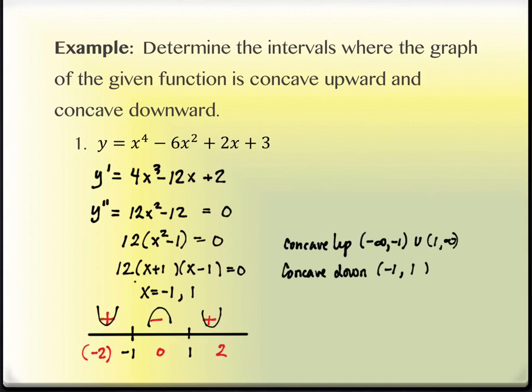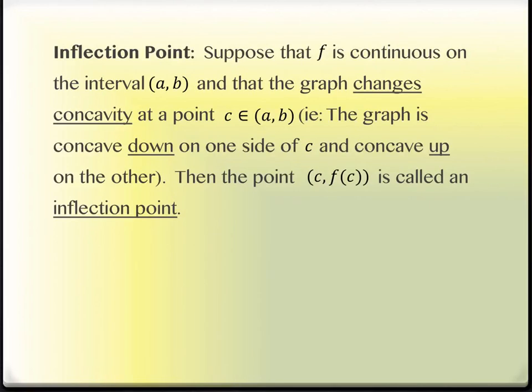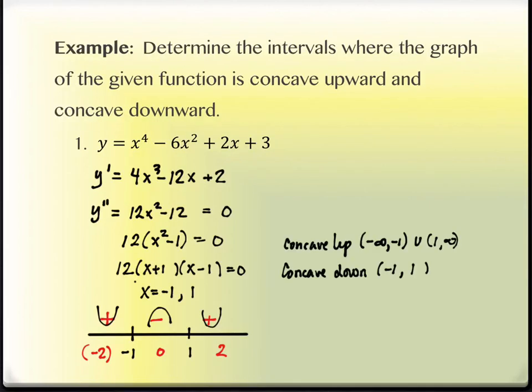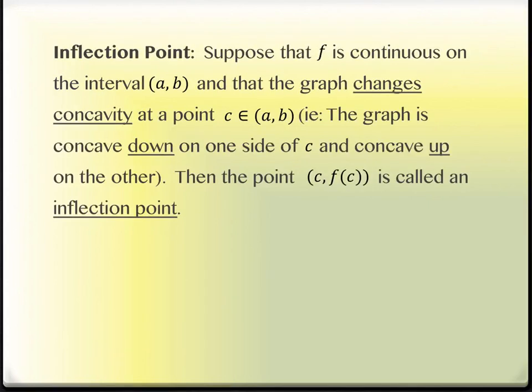These places where concavity changes from concave up to concave down — or concave down to concave up — do have a name. These locations where the second derivative equals zero are not always that name, because it doesn't have to change concavity — it's just potentially changing concavity. But if it does change concavity at those points, those points are called inflection points. We're supposing that f is continuous on interval (a, b) and it changes concavity at that point — concave down on one side, concave up on the other. If that happens, we have an inflection point.